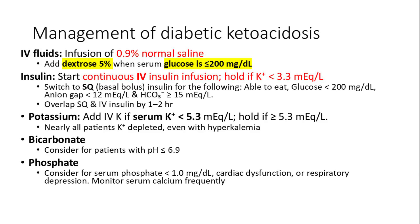Managing diabetic ketoacidosis involves 0.9% normal saline. 5% dextrose is added if glucose is less than 200. Transitioning from insulin drip to basal bolus is considered when the patient is able to eat, with glucose under 200, anion gap less than 13, and bicarbonate greater than 15. We overlap subcutaneous and IV insulin by 1 to 2 hours, and hold the insulin drip if potassium is less than 3.3. Continue potassium supplements until potassium is less than 5.3.